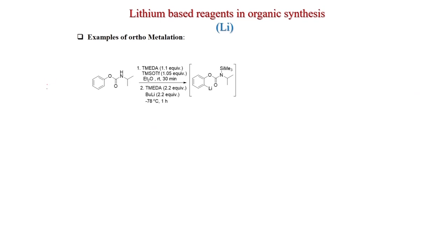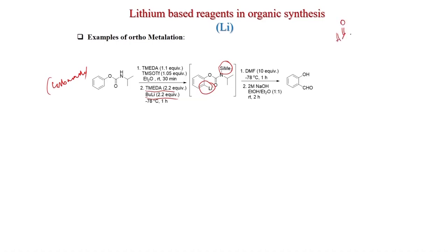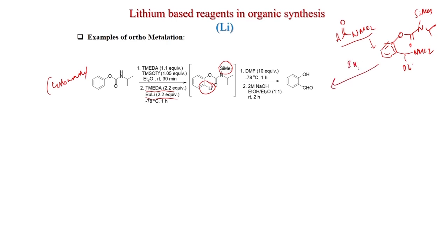With a carbamate substrate, treatment with TMEDA and TMS gives first silylation at the acidic position. Then treatment again with TMEDA and 2 equivalents of n-butyllithium gives ortholithiation, and after treatment with DMF (Me₂N-CHO), followed by 2M NaOH, you obtain salicylaldehyde.